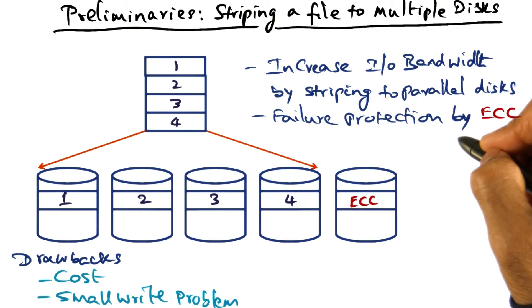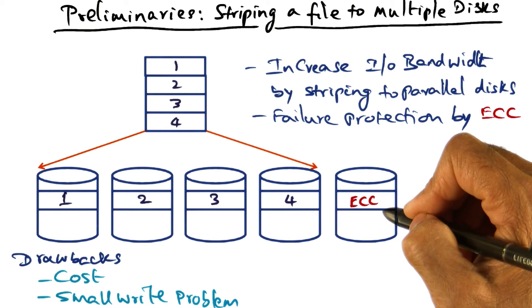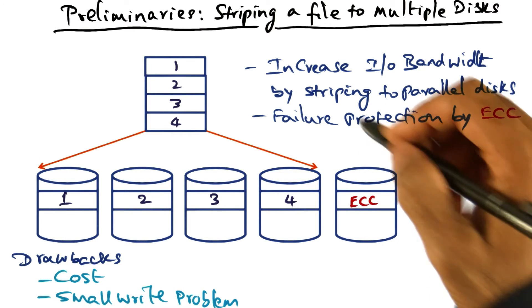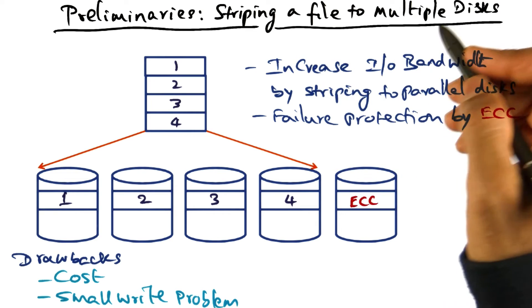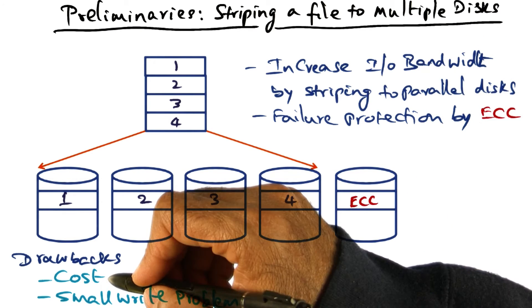Failure protection is being achieved through this error correction code. That's the idea of striping a file in the RAID system.